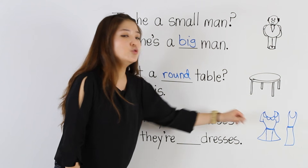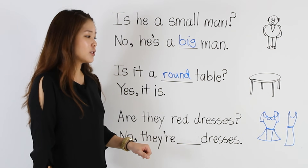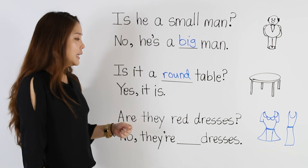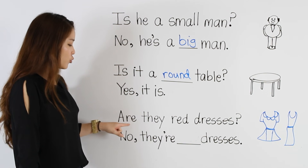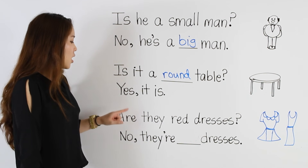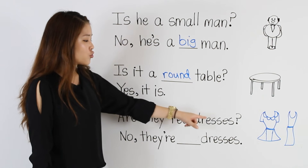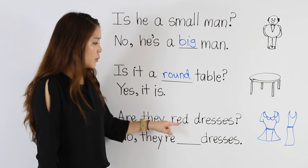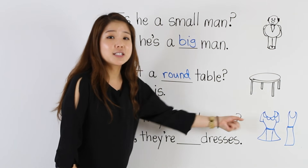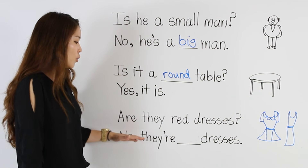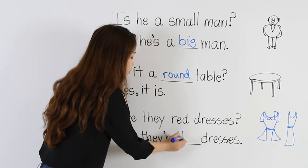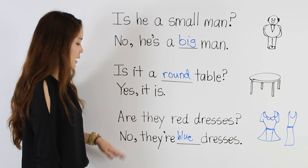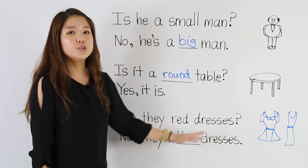And last, we have two dresses. That means the noun is plural. In that case, for the question, we begin with 'are': are they red dresses? The adjective is red. But are they red dresses? No, they're blue dresses.